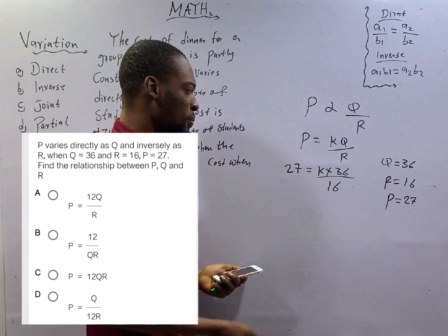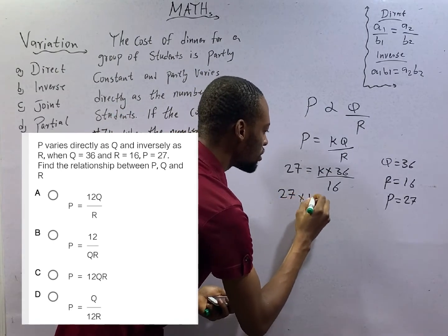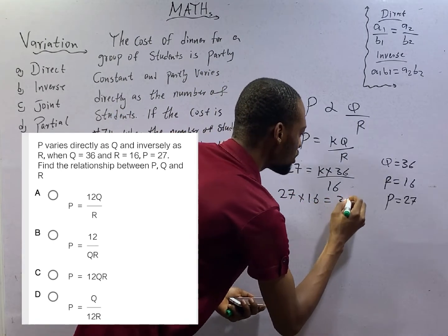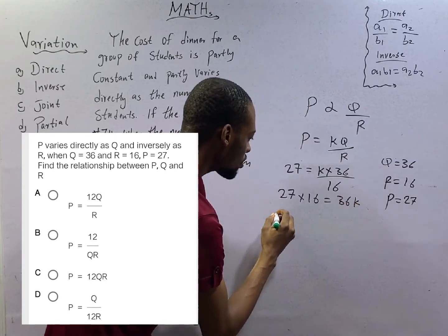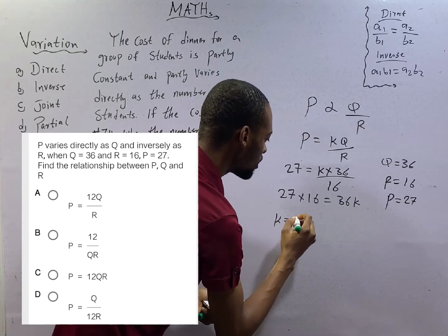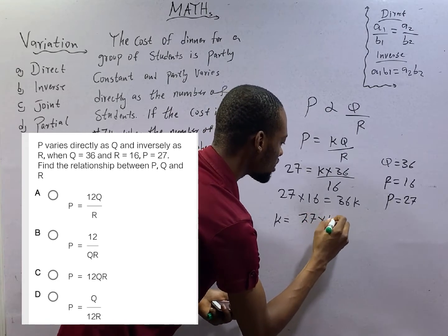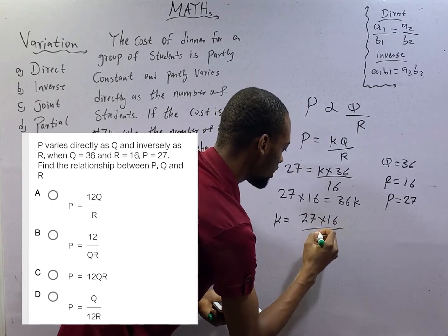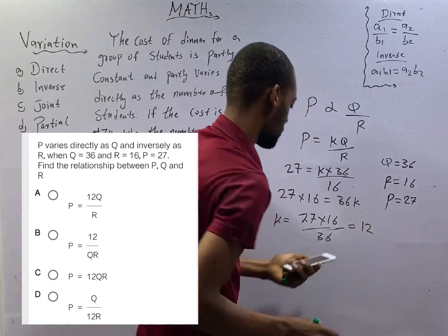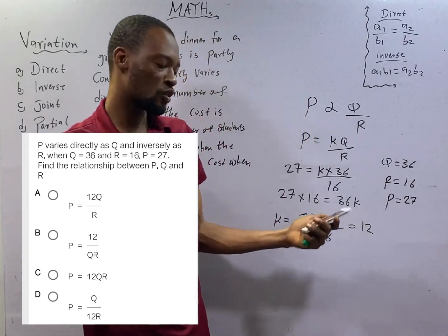K will therefore be, dividing both sides by 36, this will give you 12. The value of K is 12.